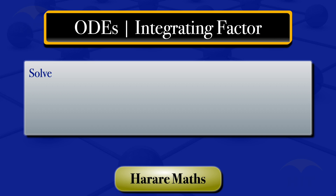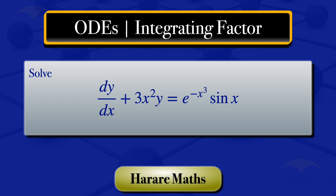In this video, I'm going to solve the ODE: the derivative of Y with respect to X plus 3X squared multiplied by Y is equals to exponent of minus X cubed multiplied by sine of X.